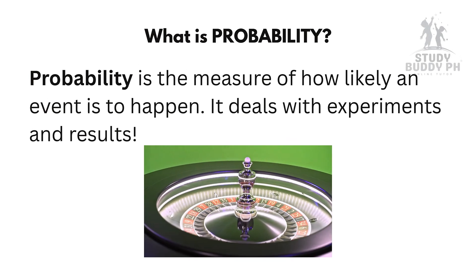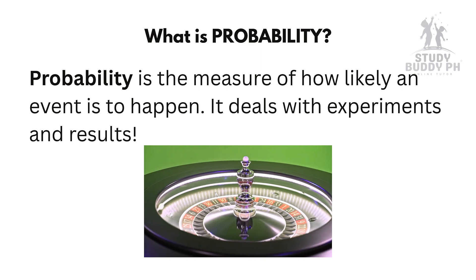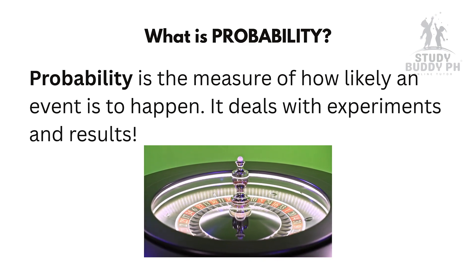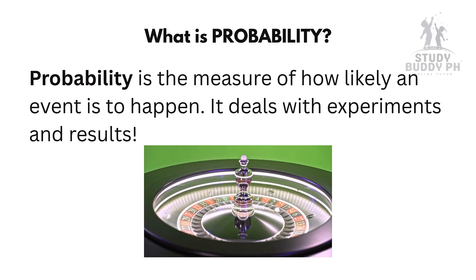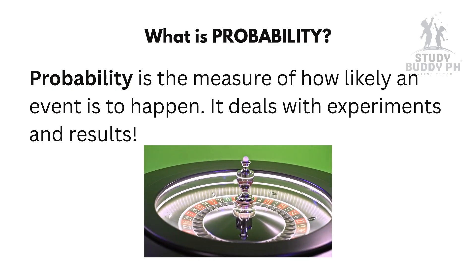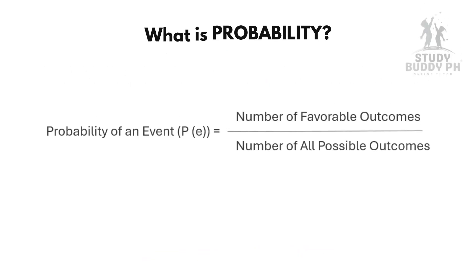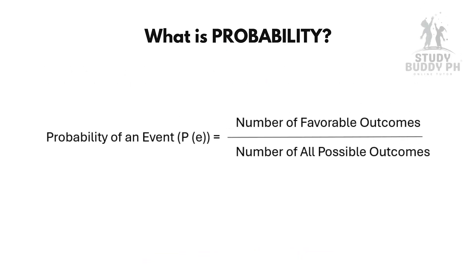Probability is the measure of how likely an event is to happen. It deals with experiments and results. The probability of an event P equals the number of favorable outcomes divided by the number of all possible outcomes.